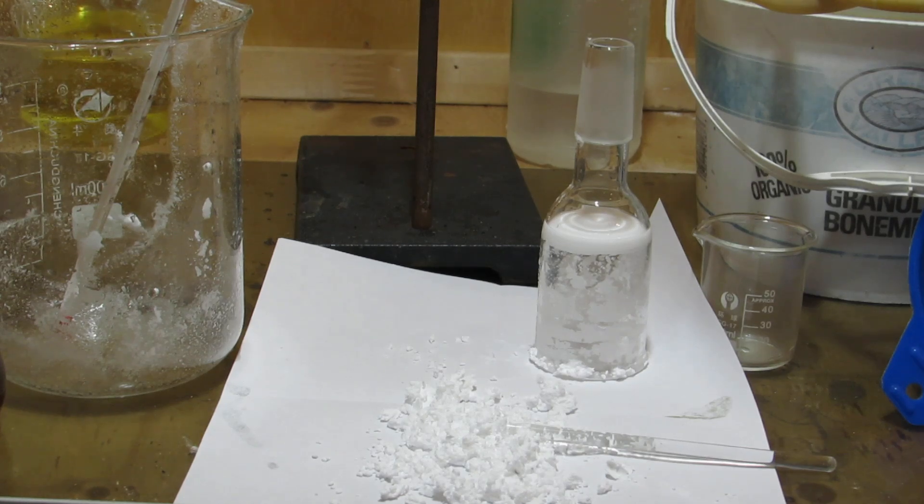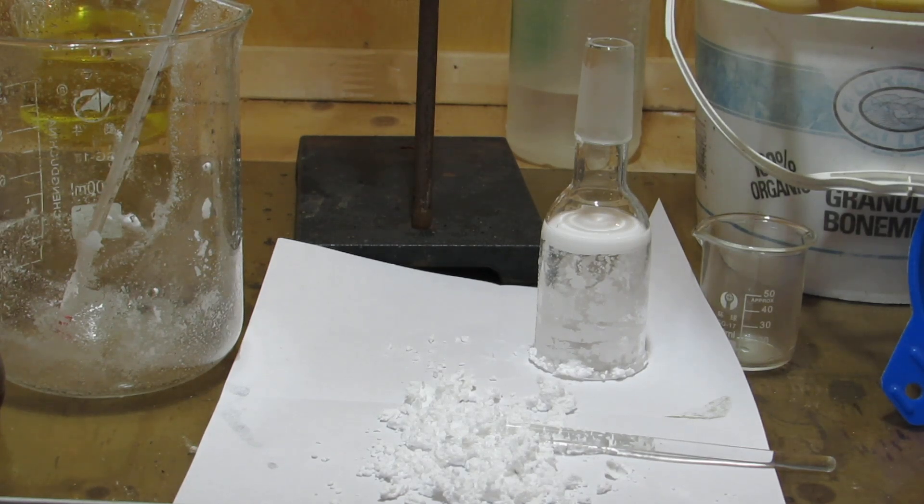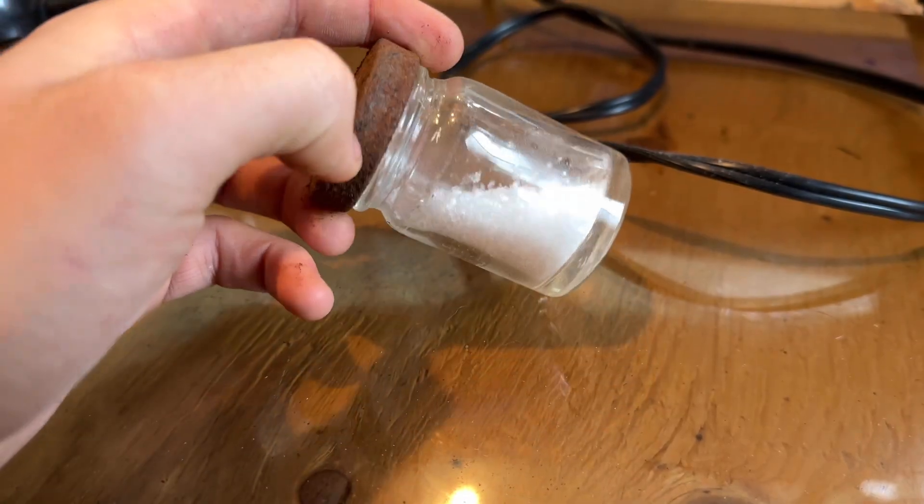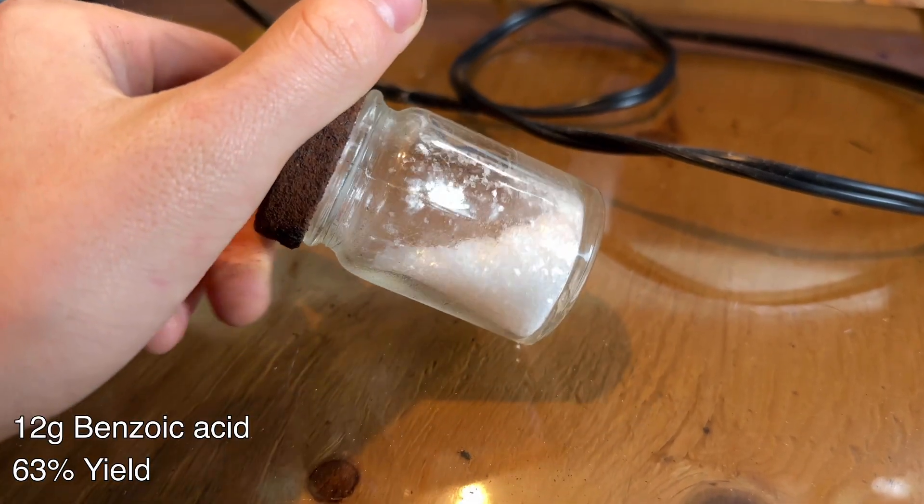The crystals were then filtered off and rinsed with a few mils of ice-cold water. After filtering, the crystals were placed on a piece of paper to fully dry. Once dry, 12 grams of pure benzoic acid was obtained, corresponding to a 63% yield based on the starting potassium permanganate.